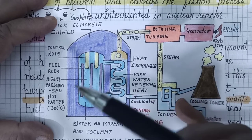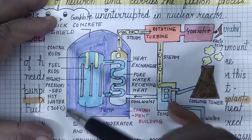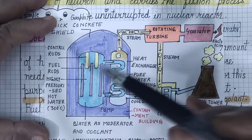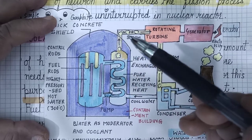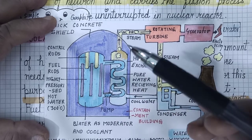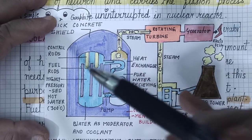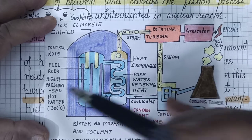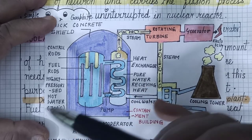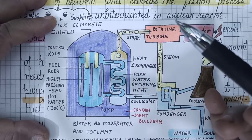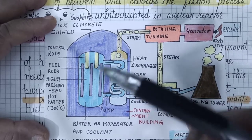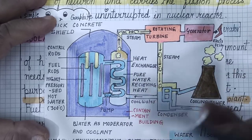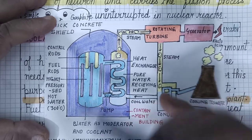To address this, we use a moderator. The function of the moderator is to slow down the neutrons emitted after fission. Those slow neutrons carry out fission of uranium-235 only — they are not absorbed by uranium-238. In this way, the fission process is carried on in a controlled manner, and we extract the energy for useful purposes, especially the production of electricity.